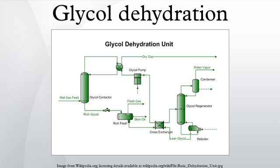Common enhanced methods include the use of stripping gas, the use of a vacuum system, the DRIZO process — which is similar to the use of stripping gas but uses a recoverable hydrocarbon solvent — and the cold finger process, where the vapors in the reboiler are partially condensed and drawn out separately from the bulk liquid.